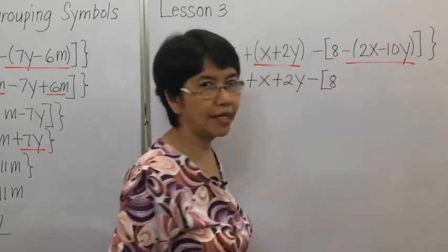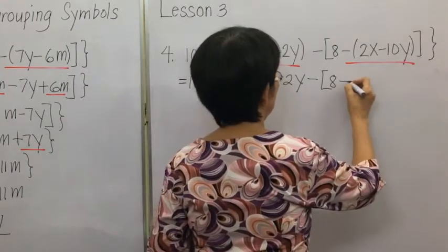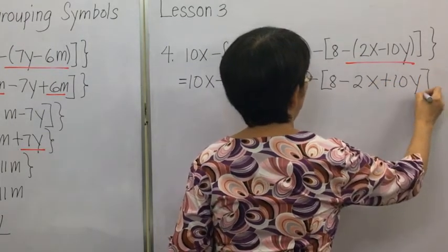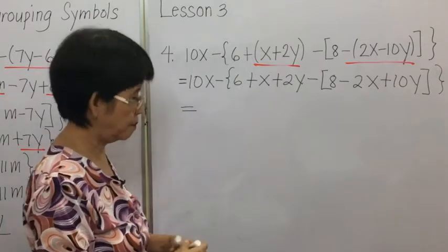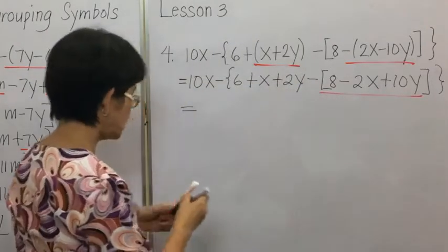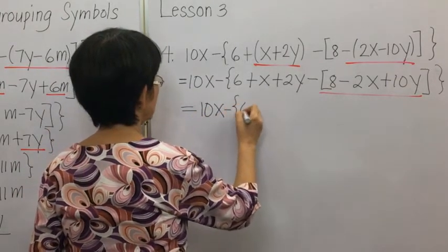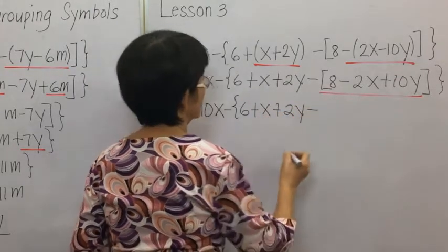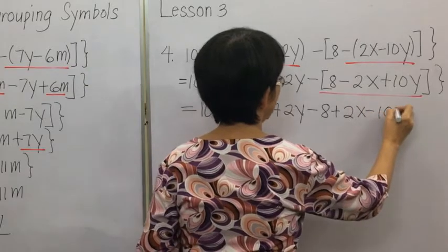We remove the next grouping symbol, but this one is preceded by a negative sign, so we change the signs inside: negative 2X plus 10Y. We then remove the brackets, copy the rest, and have negative 8 plus 2X minus 10Y.